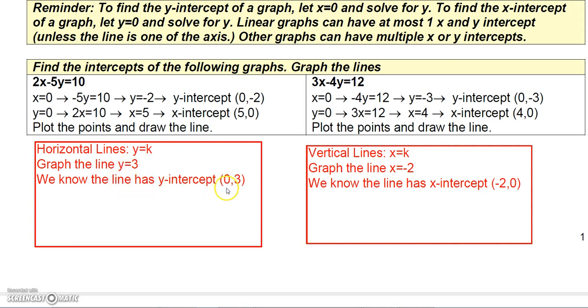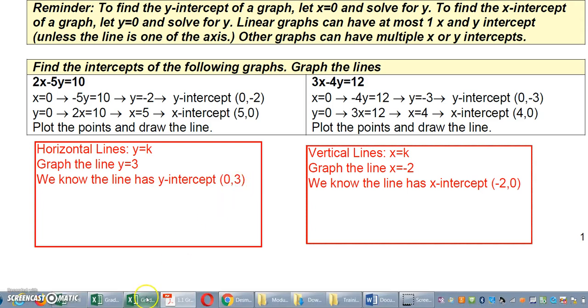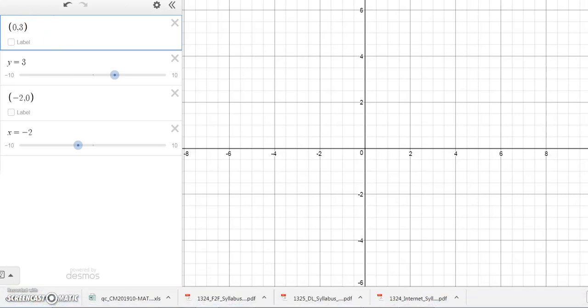Well since this line always has the value y equal 3 regardless of what x is, then we know that when x is 0 the y value must be 3. And so all we have to do to graph that is just plot the point (0, 3) and since we know the line is a horizontal line then we know the line must go through the point (0, 3) in a horizontal fashion. So that's how we graph that line.